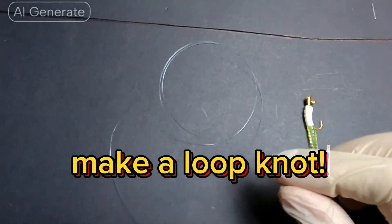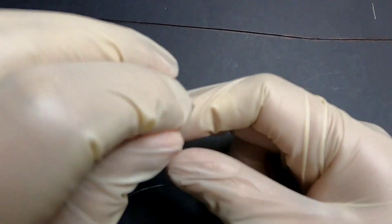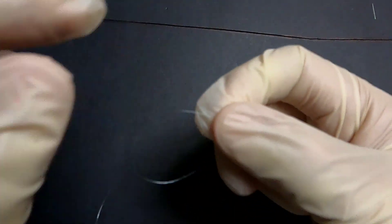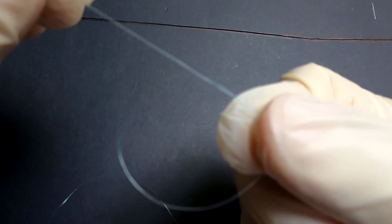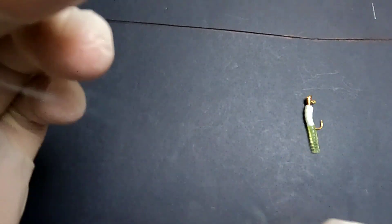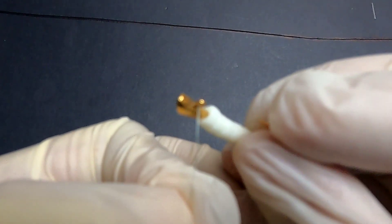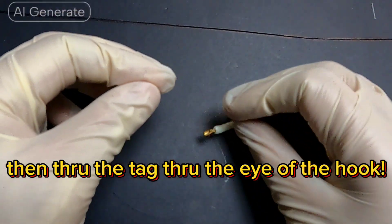Make a loop knot. First, make a loop, then through the tag, through the eye of the hook.